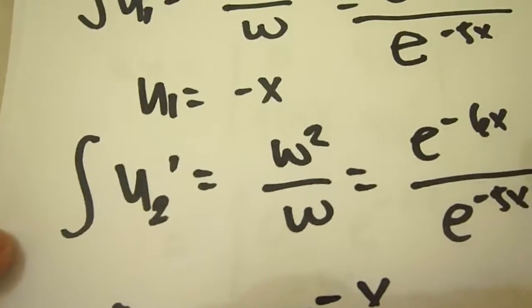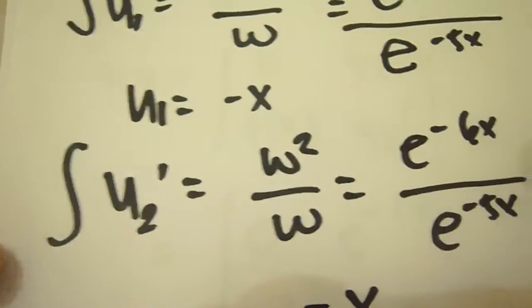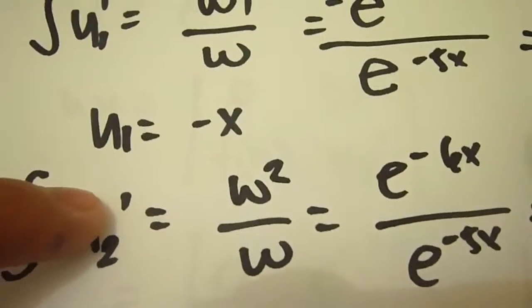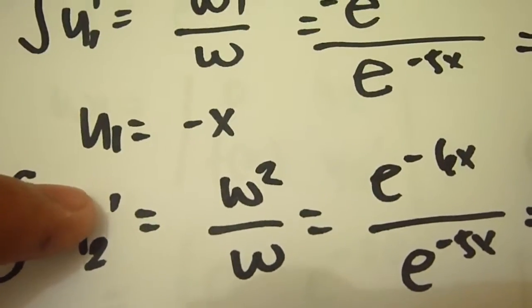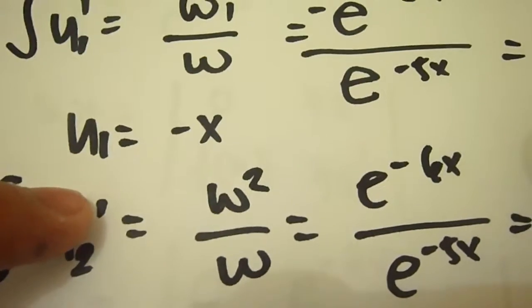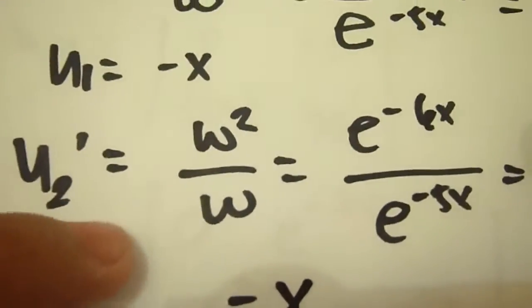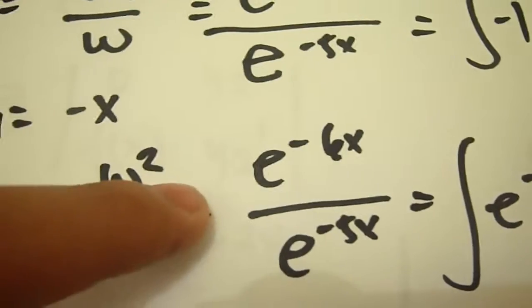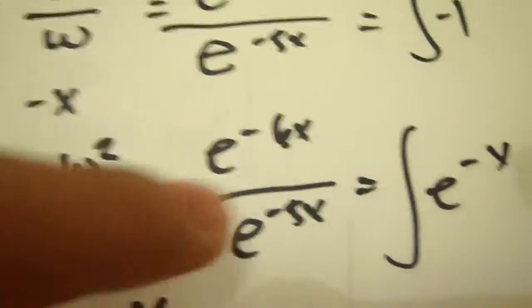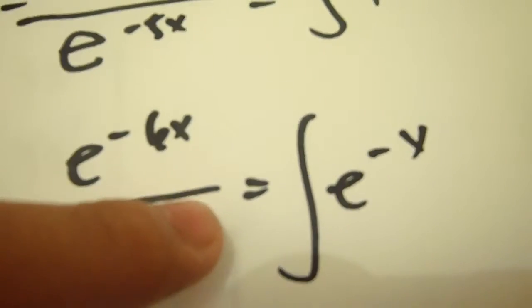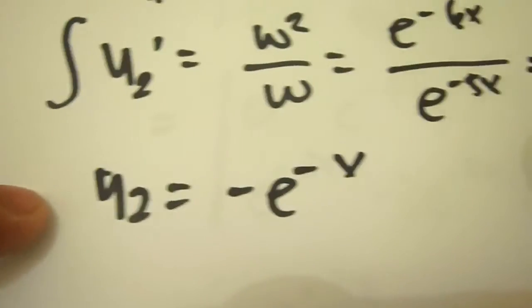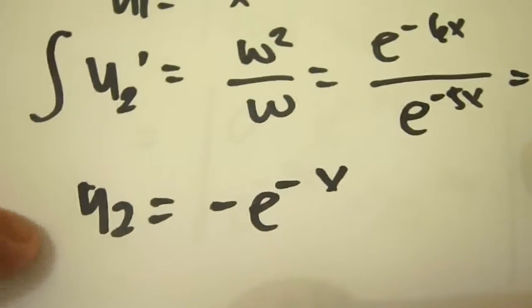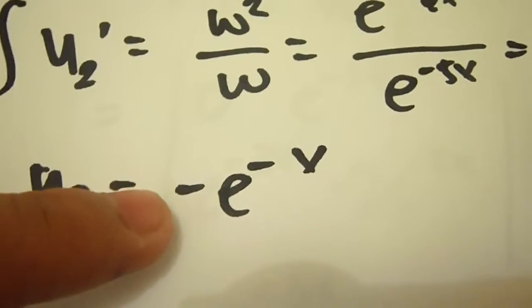Next, we integrate u2 prime, which equals Omega 2 over the Wronskian. After substituting its values, the integral is the integration of e to the negative x, so u2 equals negative e to the negative x.